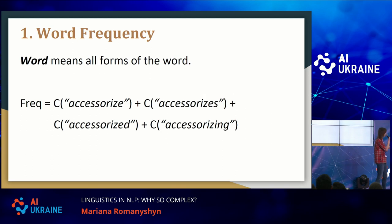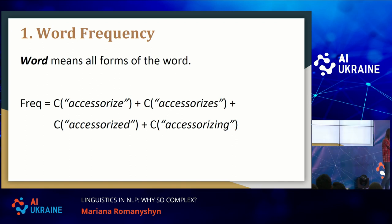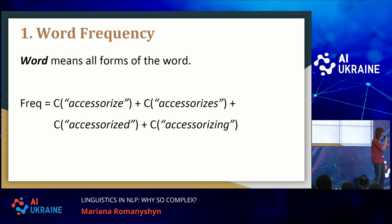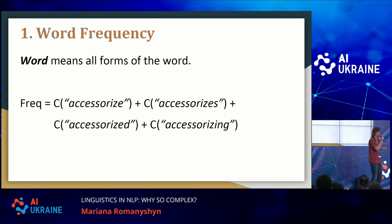Why? It's because when you were calculating that, you were calculating word form frequencies, not word frequencies. The words "accessorize" and "accessorizes" are actually two word forms of one word — a linguist would call it a lexeme. So when you want to calculate the frequency of the word, you want to take into account all of the possible forms of that word in the language. In Ukrainian, for example, that would be a horrible task — you can have 30 different forms of the verb and 14 forms of the noun.